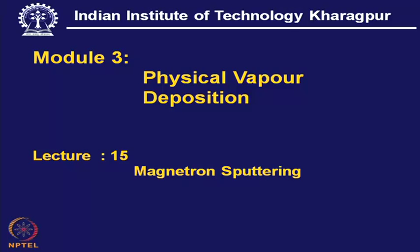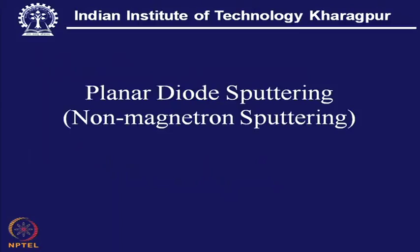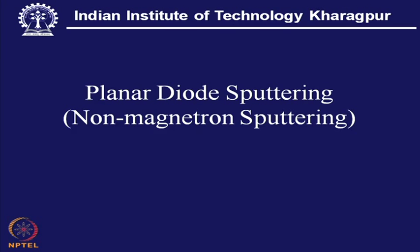Today's topic is magnetron sputtering. It is one of the deposition processes under physical vapor deposition technology. Let us have a quick look at non-magnetron sputtering, which is commonly known as planar diode sputtering — what are its features and how does it differ from magnetron sputtering?